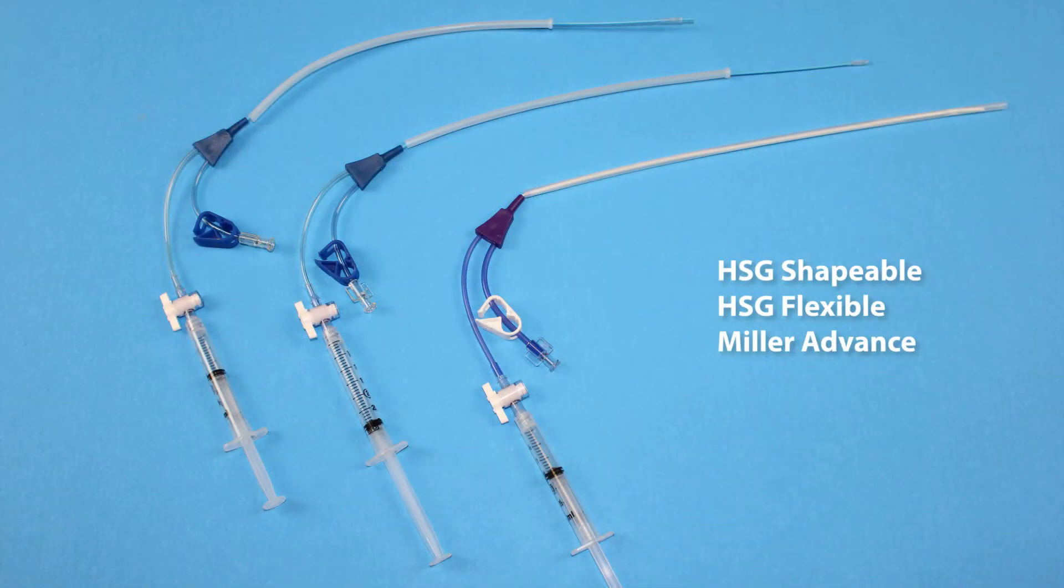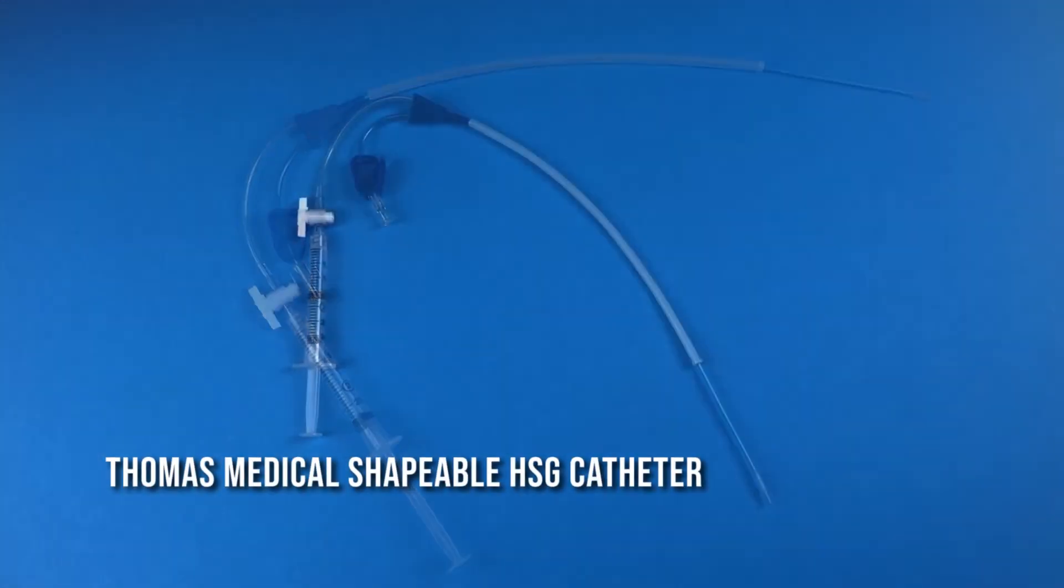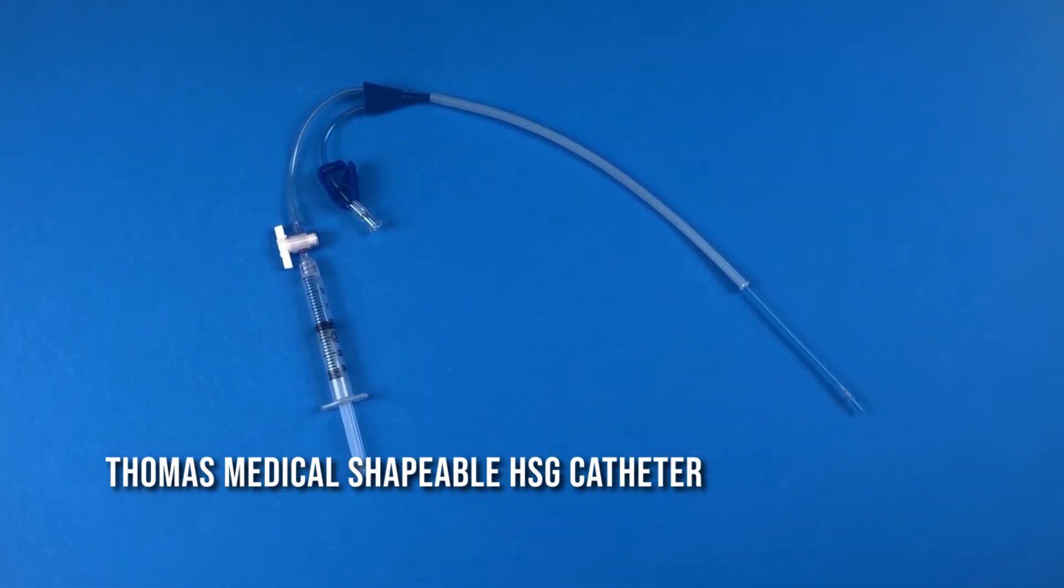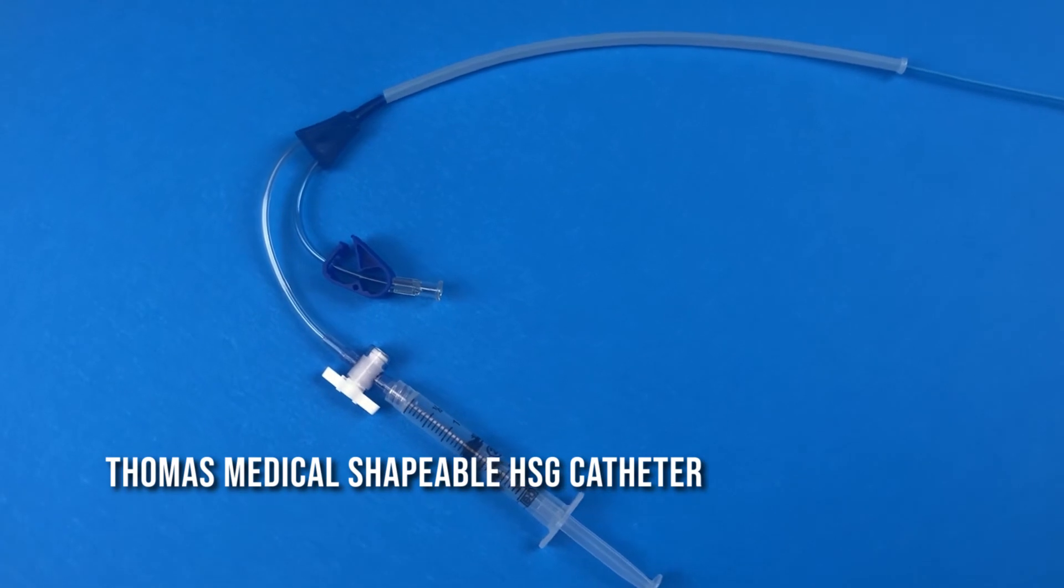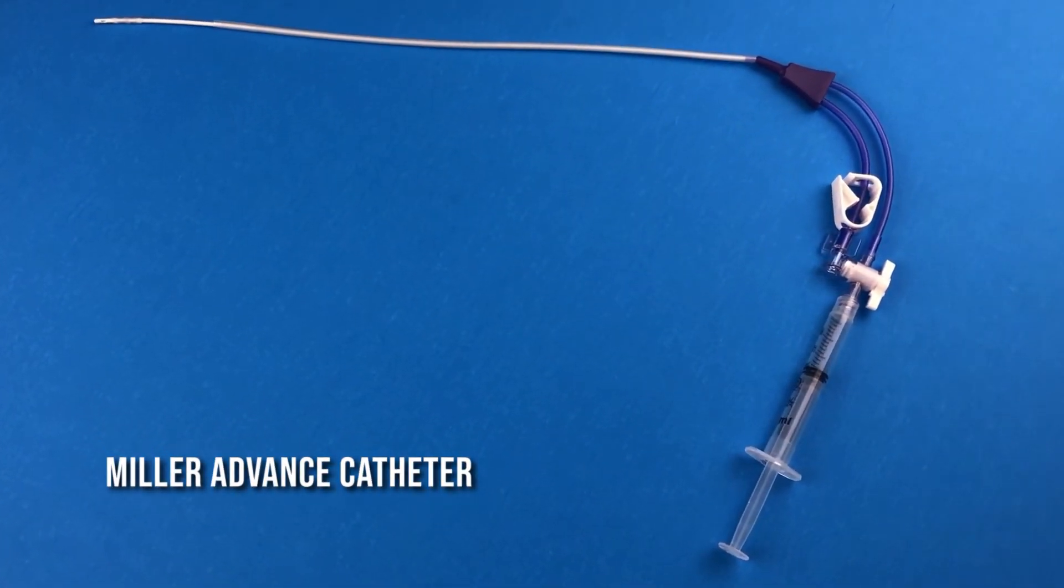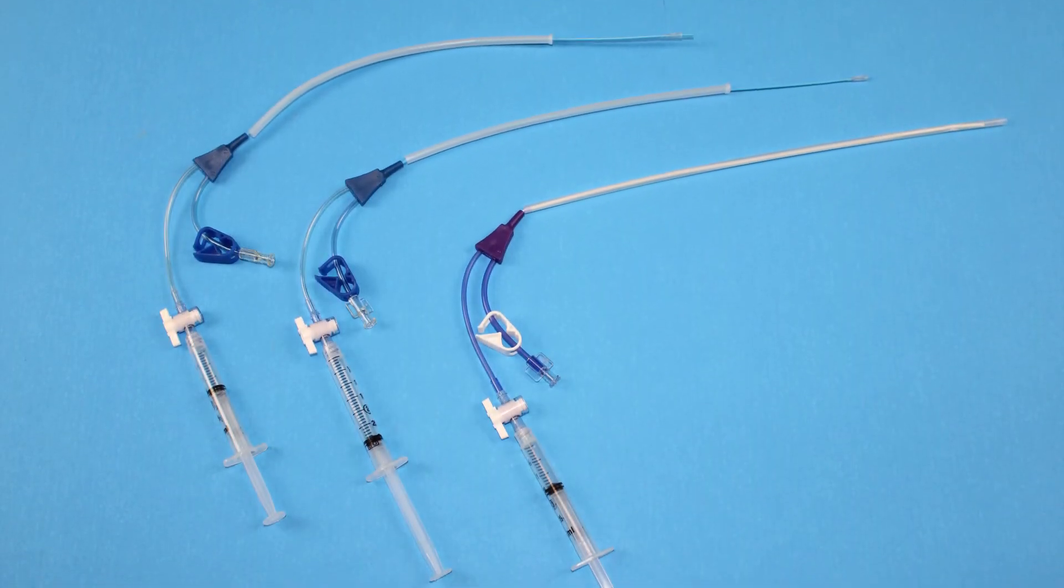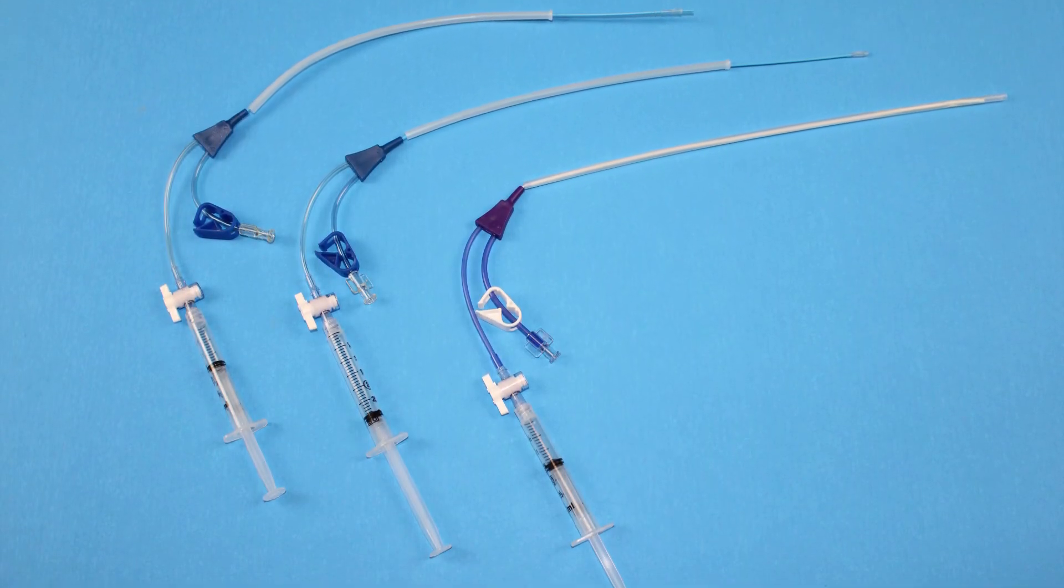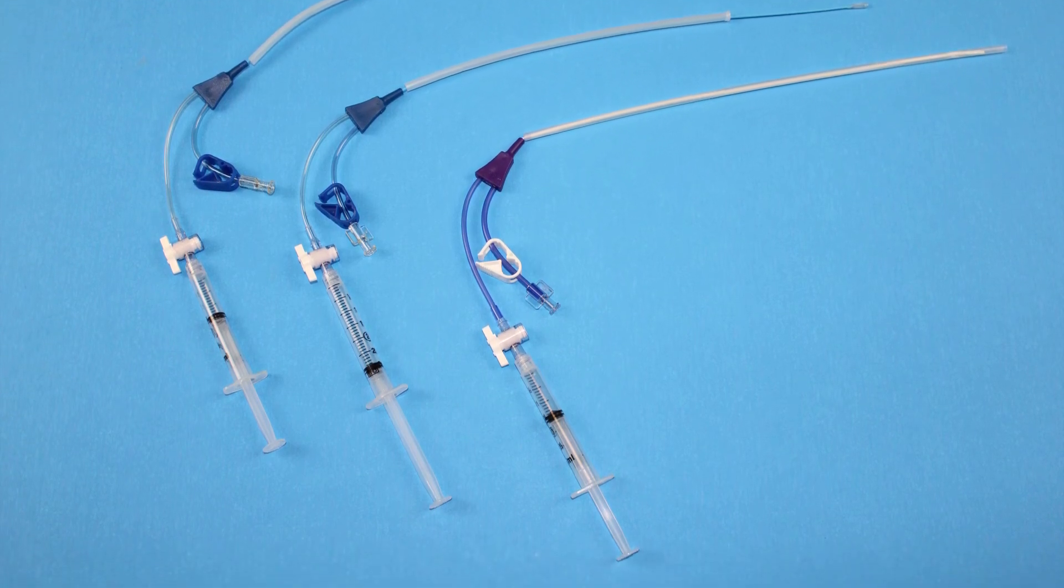Thomas Medical offers three kinds of HSG catheters: the flexible, which was demonstrated; the shapeable, which further accommodates anti- and retroflex uteri with the use of a stylet; and the Miller Advance, which provides a gentler experience for many patients. All of Thomas's catheters are available in 5 French, with the flexible and shapeable styles also available in 7 French.